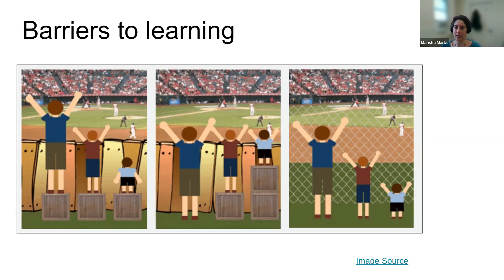Seemingly, this looks like an equitable distribution of resources — everybody can see the baseball game. But we don't know: does the tallest child feel resentment because his crate was taken away? Does the shortest child feel like he might fall off those two really high crates, or does he need help getting up? Did he miss a key play while waiting to get the second crate? So then we think: how can we remove the barriers? The barrier here is the wooden fence — when it's exchanged for a chain link fence, all children can see the baseball game right away without needing crates.